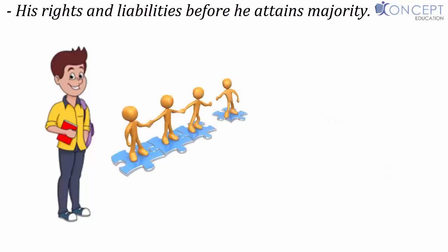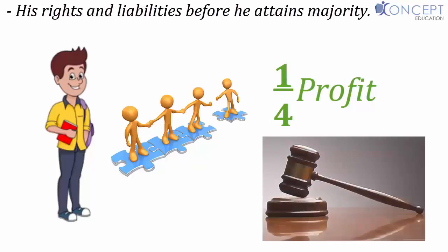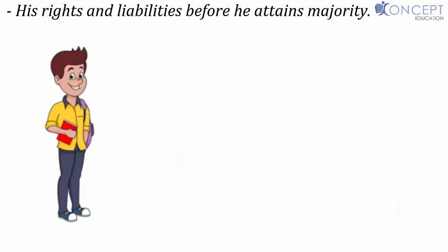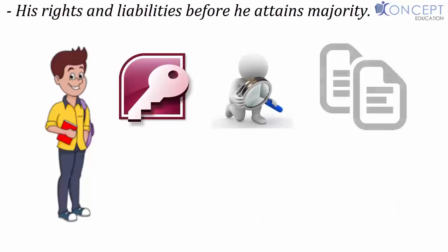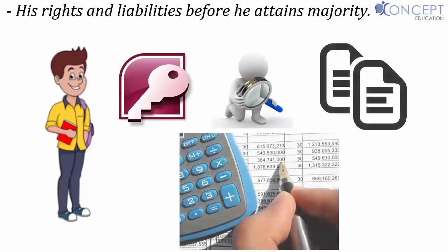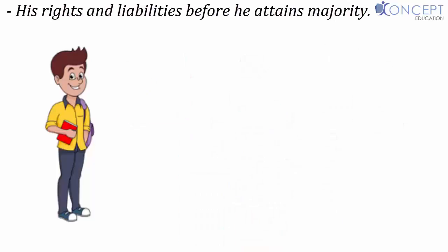For example, if A, B, and C start a partnership and agree to admit D as a minor partner with a condition to pay him one-fourth share of profits, they must pay him that one-fourth share. If they don't, D has the right to sue the other partners for recovery. Second, a minor has the right to access, inspect, and copy any of the accounts of the firm.